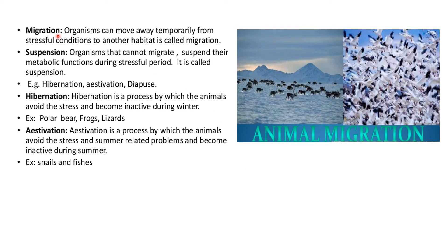The third type of response is migration: organisms can move away temporarily from stressful conditions to another habitat. For example, if a region is very cold and they cannot bear it, they will migrate to an area where the temperature is warm, and when summer comes they return to the original area. The fourth type is suspension: organisms that cannot migrate suspend their metabolic functions during stressful periods and go into a dormant state.